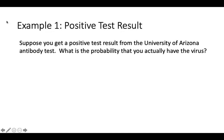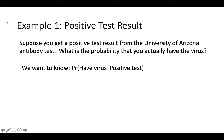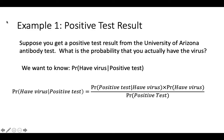Suppose that you take the University of Arizona's antibody test and you get a positive test result. What is the probability that you actually have the virus? What we want to know is: what is the probability that you have the virus, given that you have a positive test result? Using Bayes' Rule, we know that the probability that you have the virus given a positive test equals the probability of a positive test given that you have the virus, multiplied by the probability that you have the virus, and divided by the overall probability of having a positive test result.